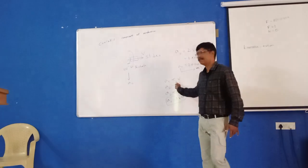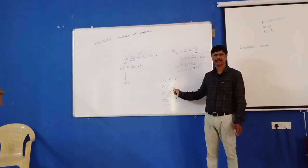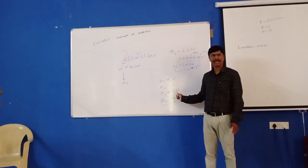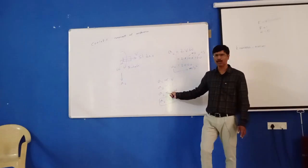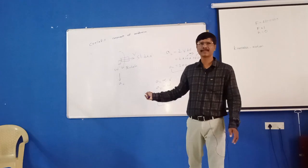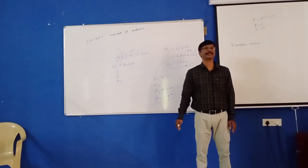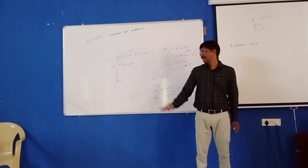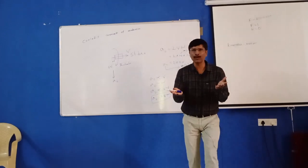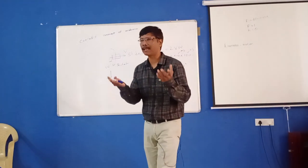AC is directly proportional to B. When you want to remove the proportionality, you want to put the constant. The constant can be found out with the help of experiment. This is the engineering. In engineering, you should know how to play with variables.